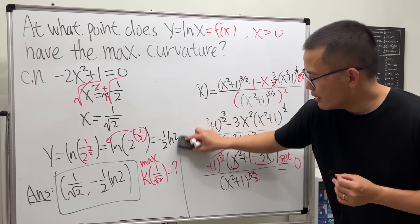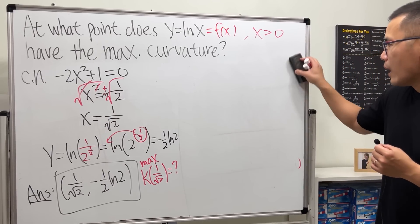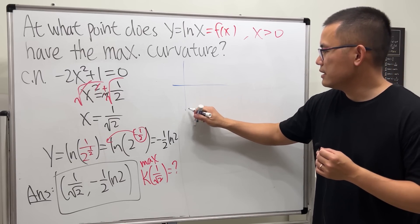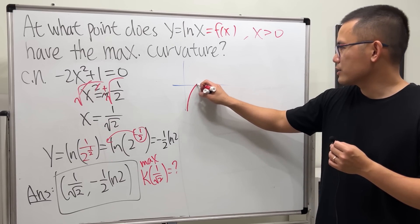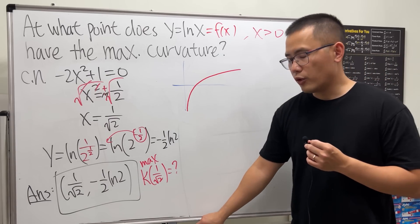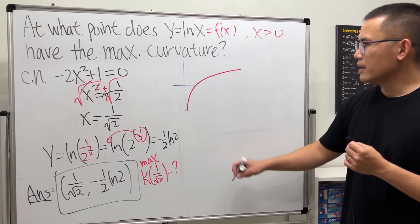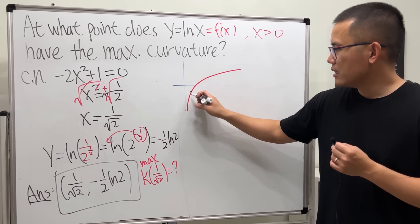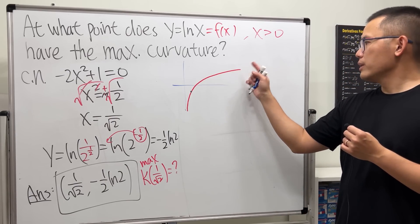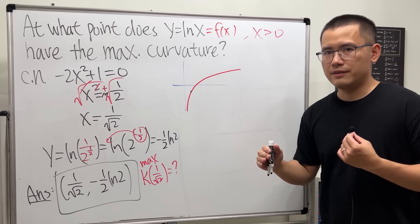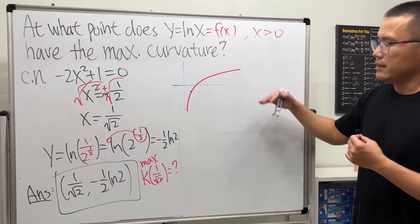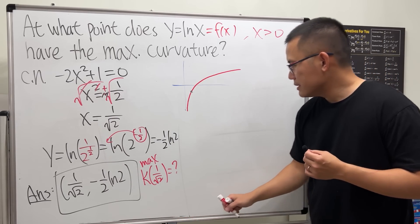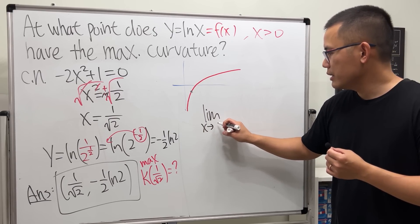Lastly, let's talk about what happens to the curvature of ln(x) as x goes to infinity. Looking at the graph of ln(x): the maximum curvature occurs at x ≈ 1/√2 ≈ 0.7, which gives a negative y-value. As you keep going to the right, the curve becomes more and more flat — it doesn't have a horizontal asymptote, but it barely bends anymore.